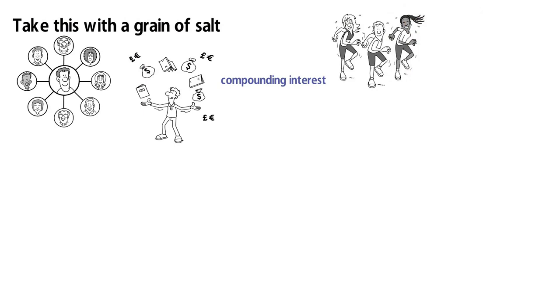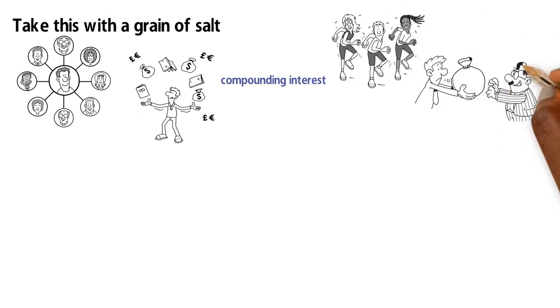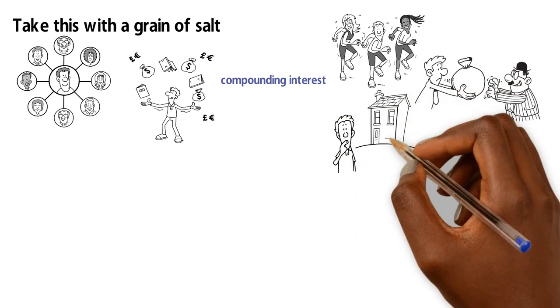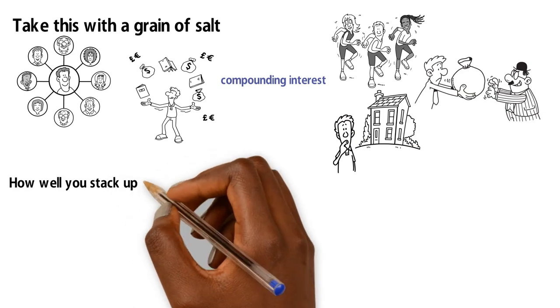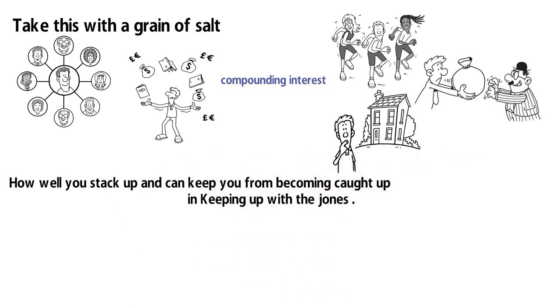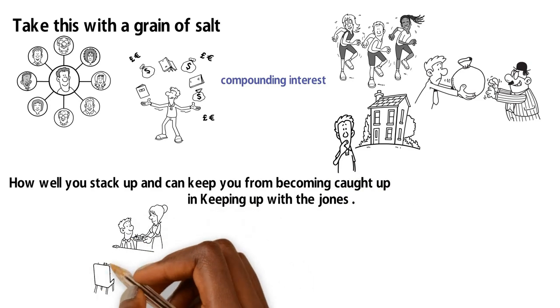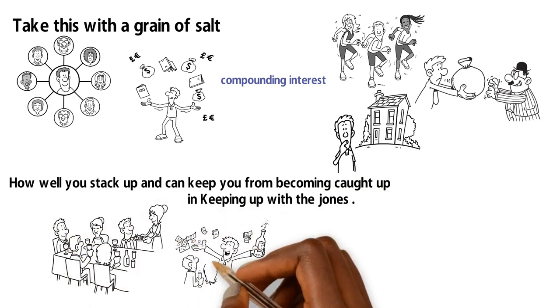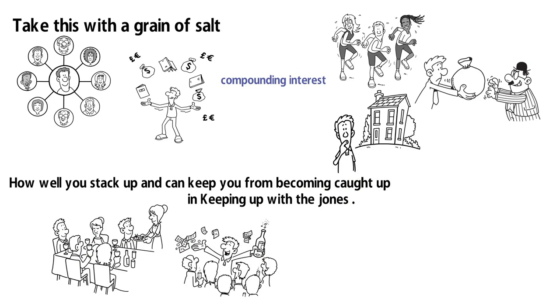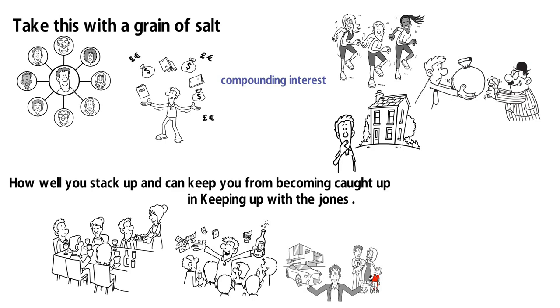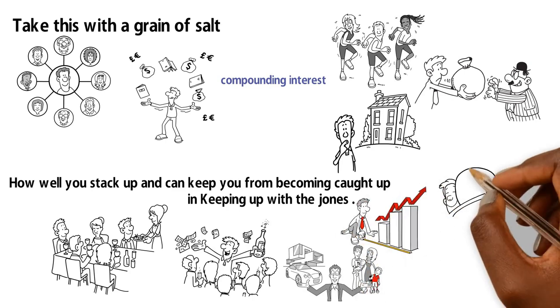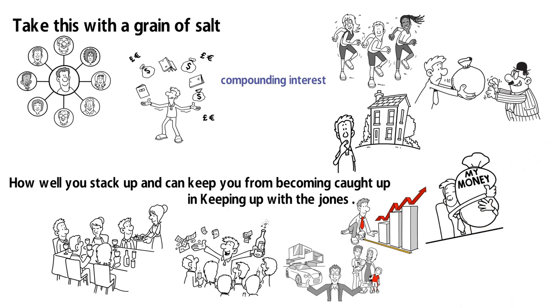Now take this with a grain of salt since it takes younger people longer to reach their expected wealth because of compounding interest. So for all the youngsters out there, don't feel bad because a 60-year-old will have reaped the benefits of interest they get on their interest for much longer. But this is a decent indicator of how well you stack up and can keep you from becoming caught up in keeping up with the Joneses. There are so many people who appear wealthy but in reality spend all their money on keeping up with this illusion. They buy things they don't need with money they don't have to impress people they don't like. Try to get closer to your expected wealth over time, not by saving excessively to the point that you can't enjoy life, but by avoiding spending money too much in the first place.